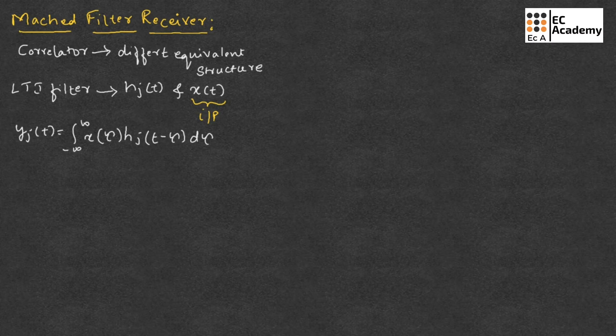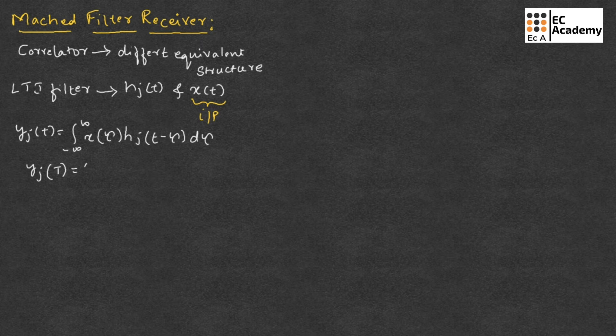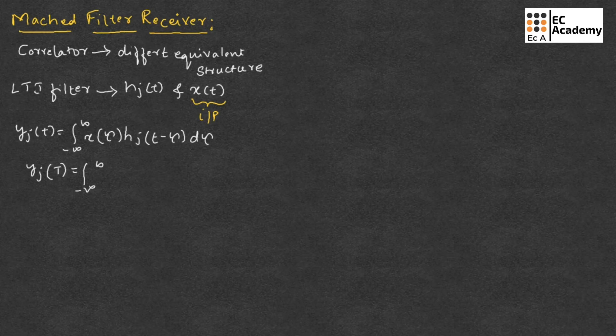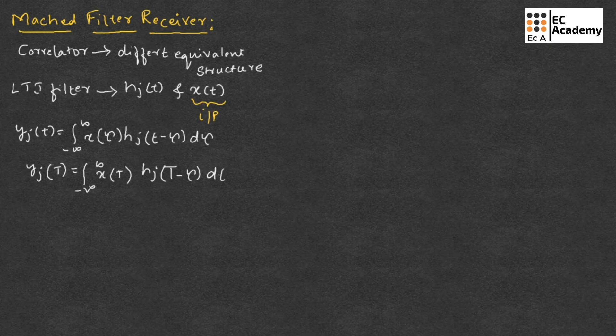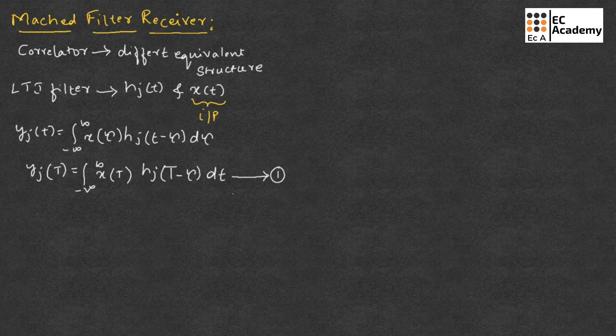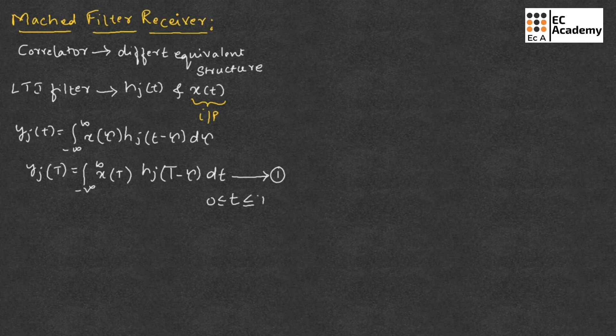So using this equation, we can write yj of t is equal to integration of minus infinity to infinity x of t Hj of t minus tau dt. Let us call this as equation number 1 because t value will range from 0 to capital T.